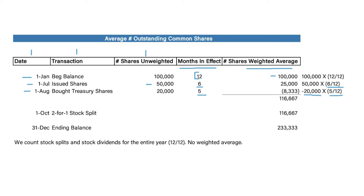So up to this point, we have 116,667 shares. Then on October 1st, we have a two-for-one stock split, meaning for every one share of stock, there are now two shares. So we take the total balance before the stock split and simply double it, giving us an ending balance of 233,333.